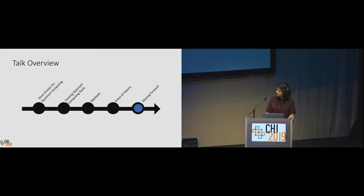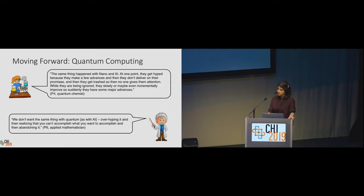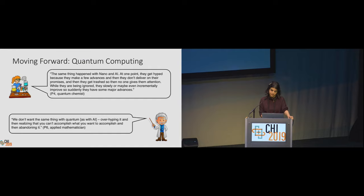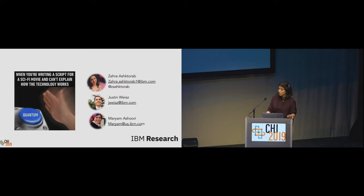Moving forward, while we favorably suggest potential directions for the expansion of quantum computing, we acknowledge that our optimism must be tempered with realities of the field. Scientists did talk about skepticism. One quantum chemist said, 'The same thing happened with nano and AI — they get hyped because they make a few advances and then they don't deliver on their promises.' Another participant said, 'We don't want the same thing happening with quantum as with AI: overhyping it and then realizing you can't accomplish what you want and then abandoning it.' But these concerns around potential disillusionment should not be reasons to avoid approaching the field. Instead, we see them as opportunities to show the strength that great HCI research can bring.